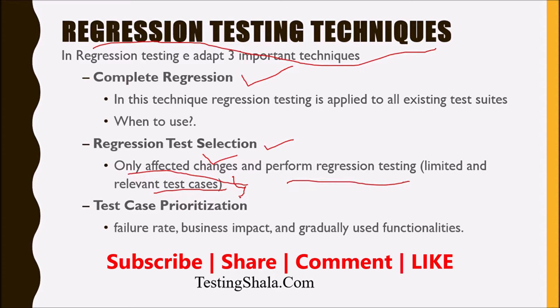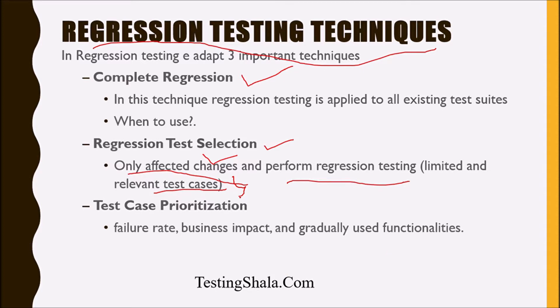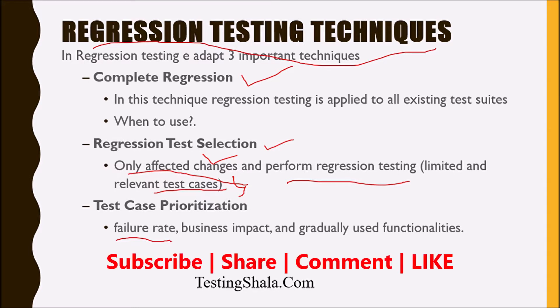The third important technique used in regression testing is based on the failure rate. If a given feature is failing very frequently, then you should pick those test cases very often, because there are chances that the particular developer, or the architecture is getting changed, or due to the complexity, the failure rate is very high.